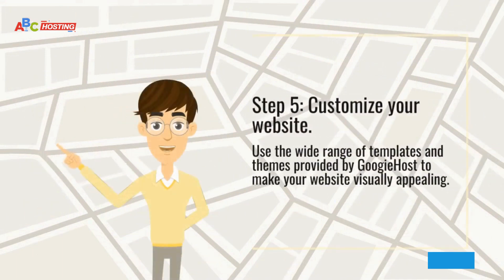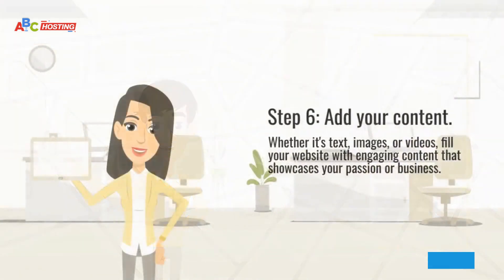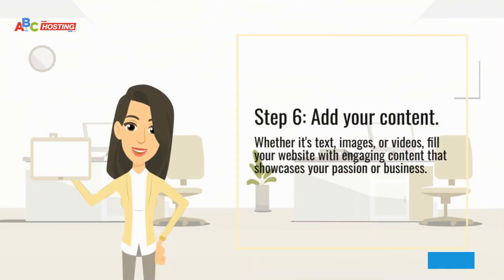Step 5: Customize your website. Use the wide range of templates and themes provided by Gookiehost to make your website visually appealing. Step 6: Add your content. Whether it's text, images, or videos, fill your website with engaging content that showcases your passion or business.